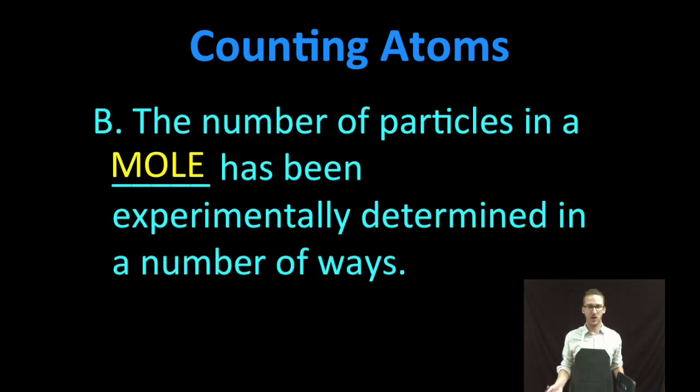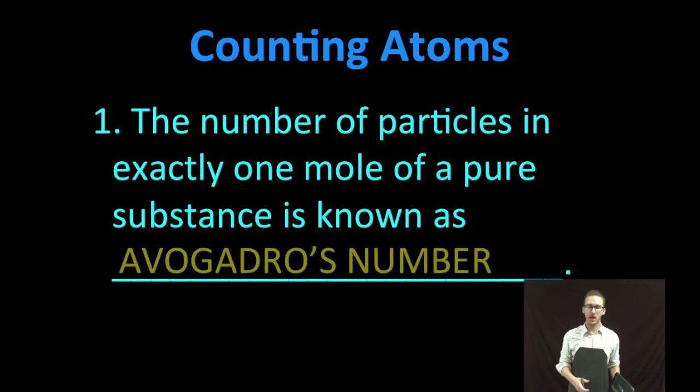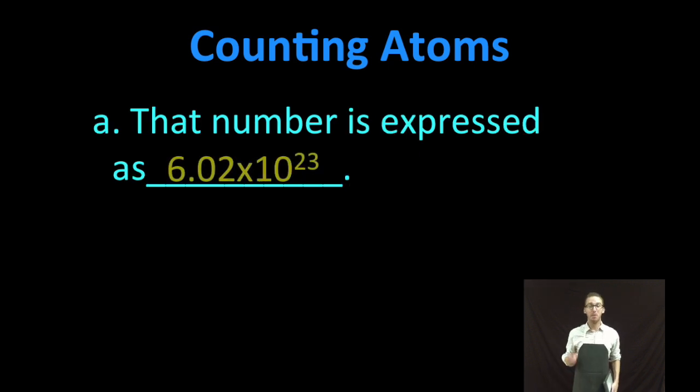Now the number of particles in a mole has been experimentally determined in a number of ways, and that number of particles in exactly one mole of a pure substance is known as Avogadro's number. And that number is a big one because we're talking about atoms which are really really small particles. Avogadro's number: 6.02 times 10 to the 23.